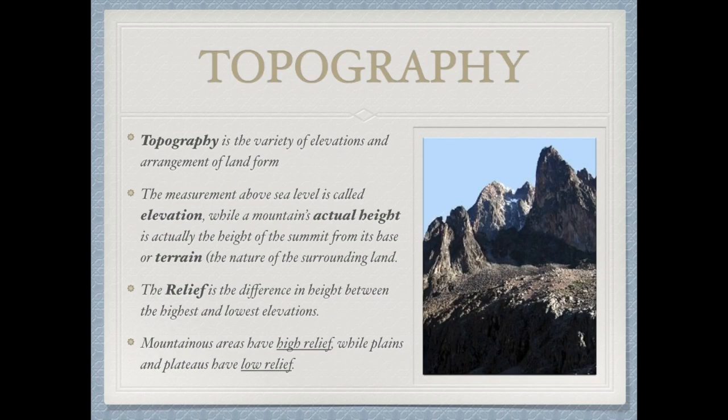The word topography refers to different elevations — a variety of elevations and arrangements of land. This covers something that could be very high or very low, from below sea level all the way up to mountains above sea level. The measurement above sea level is called elevation.